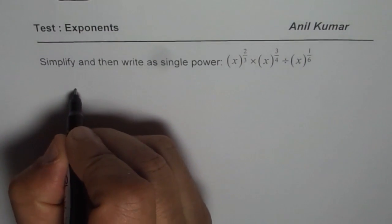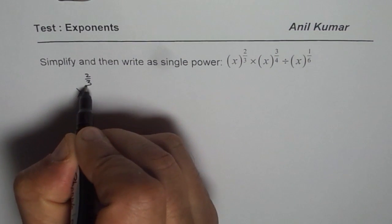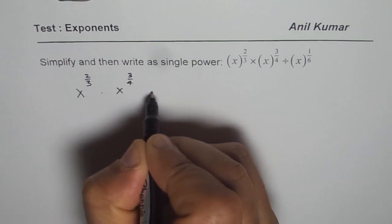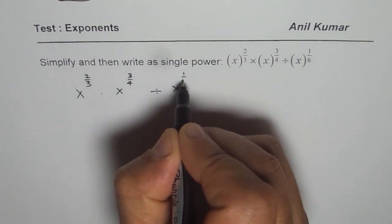So let me rewrite the question. We have x to the power of 2 over 3 times x to the power of 3 over 4 divided by x to the power of 1 over 6.